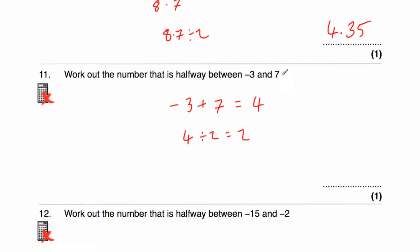Adding negative 3 and 7 is equal to 4 — I like to think of it in terms of bank accounts: if I have negative £3 in the bank and I put £7 in, my balance would say £4. Divided by 2 gives us 2. So the number halfway between negative 3 and 7 is 2. Check: from negative 3 to 2 we add 5, and adding another 5 gives 7.